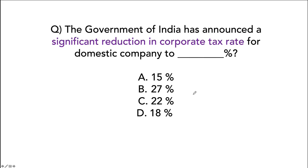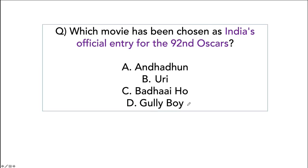The Government of India has announced a significant corporate tax cut for domestic companies, reducing it to 22%. Which movie has been chosen as India's official entry for the Oscar Awards? This film is directed by Zoya Akhtar and is called Gully Boy — based on the lives of rappers Naezy and Divine.